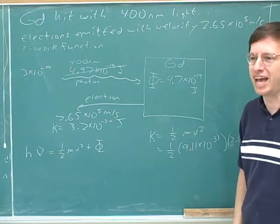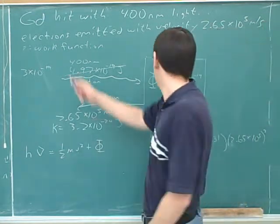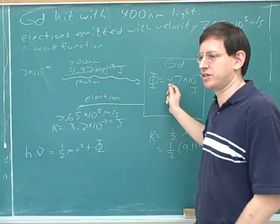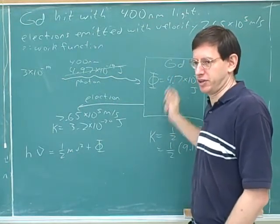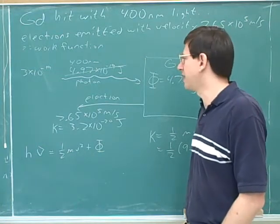Nothing. It just doesn't have enough energy to remove the electrons, so basically nothing would happen. So that's why the work function is a kind of a threshold that we have to get over. That's right.